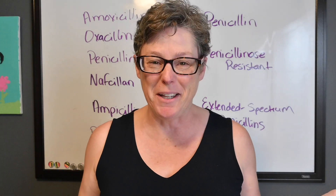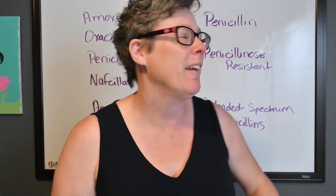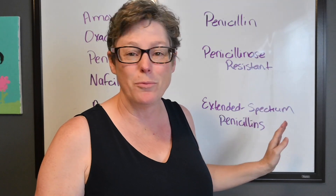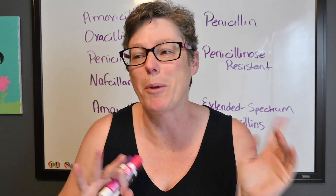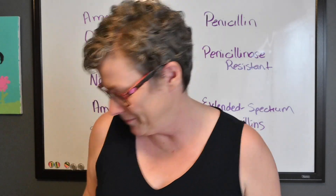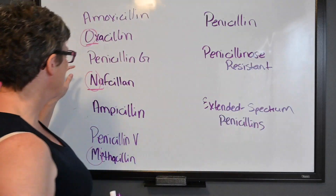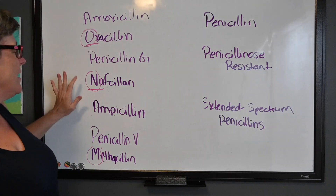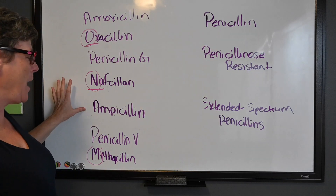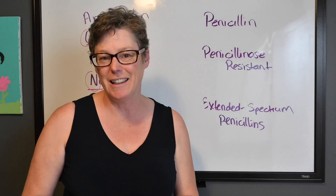Let's have a little fun. On one side of the board are all the drug names, and on the other side are the three classifications: penicillin, penicillinase-resistant, and extended-spectrum penicillin. Pause this video and match those drugs with the correct type. The answers: nafcillin, oxacillin, and methicillin are all penicillinase-resistant. Amoxicillin and ampicillin are extended-spectrum. Penicillin G and penicillin V are plain penicillin.